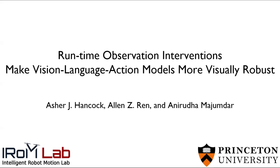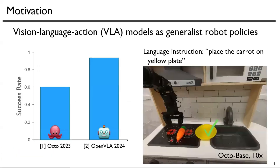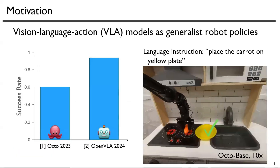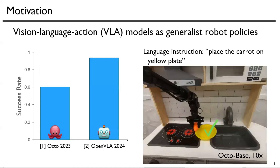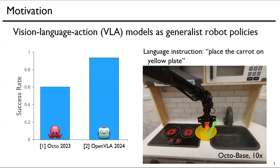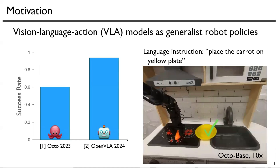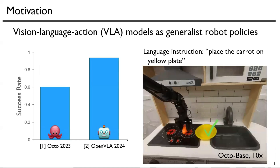Runtime observation interventions make vision-language action models more visually robust. A long-standing goal in robotics is to develop a robot policy capable of performing tasks on the fly in many environments. Recently, vision-language action models, or VLAs, have shown promise towards this goal.